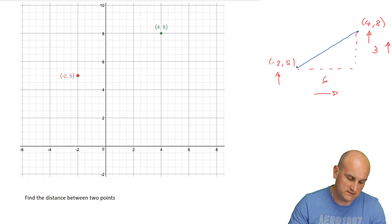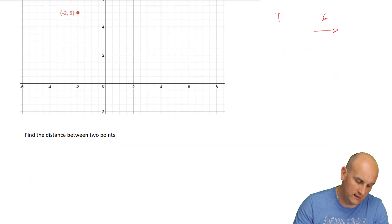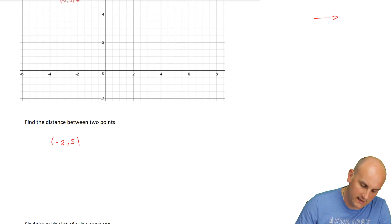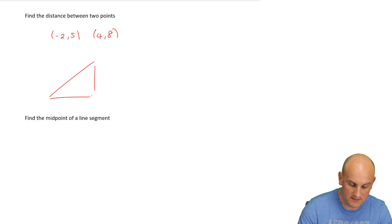The first thing says find the distance between the two points. So I've got minus two and five, and I had four, eight. I'm going to draw a right angle triangle because I know the distance between two points is basically finding the length of a hypotenuse. Length, hypotenuse, Pythag, I'm going to use a squared plus b squared equals c squared.